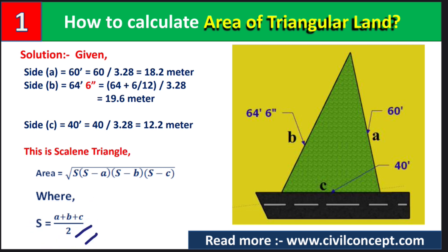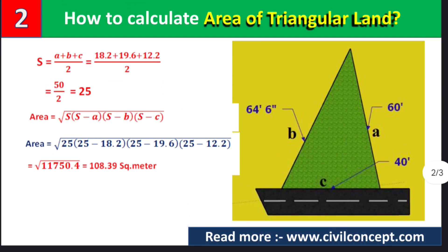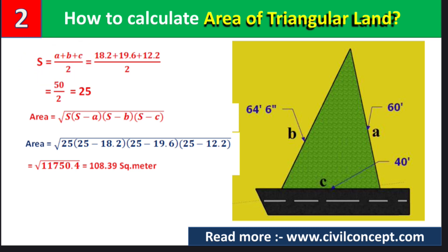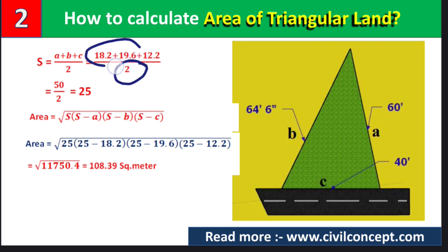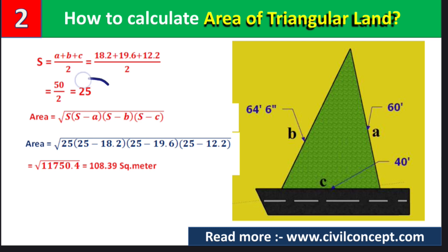So s is equal to (a + b + c) / 2, which is (18.2 + 19.6 + 12.2) / 2. After calculating, we get s equal to 25.